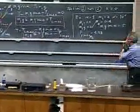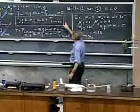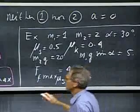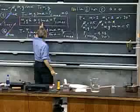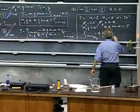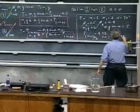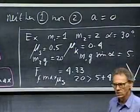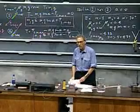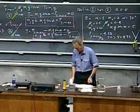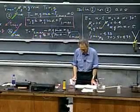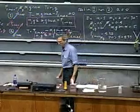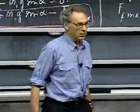We're well on our way. Let's first test whether condition one is met. Is 20 larger than 5 plus 4.33? The answer is yes, it is. So we know that it's going to be accelerated uphill — that is non-negotiable. So now I can ask: what is the acceleration and what is the tension in the string?